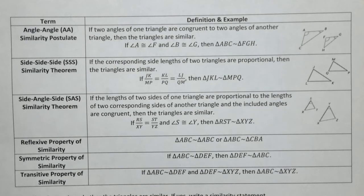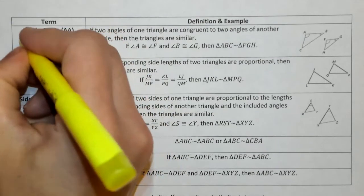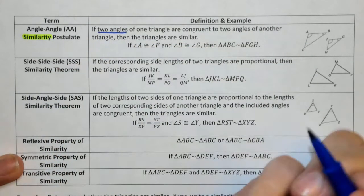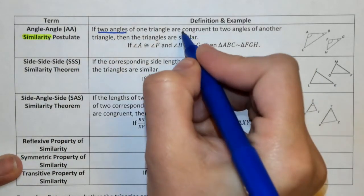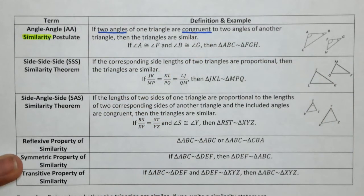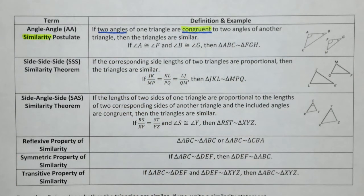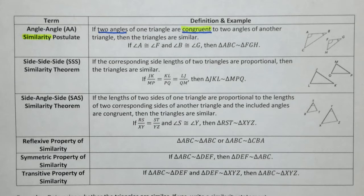The first one we're going to talk about is your angle-angle similarity postulate. Going with similarity, not congruent. This is going to state that if two angles of one triangle are congruent to two angles of another triangle, then they are going to be similar. When we're looking at angles, the angles will be congruent. Your angles can be the exact same size, the exact same measurement, but the shape can be a different size.